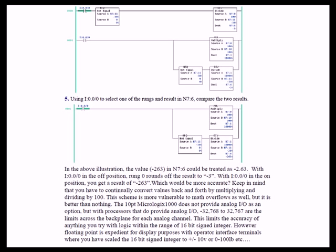Keep in mind that you have to continually convert values back and forth by multiplying and dividing by 100. Now this scheme is very vulnerable to math overflows as well, because you cut your total range down by 100. But it is better than nothing, and sometimes you want to display what appears to be a floating point on the screen of an MMI. You can simply do this by using two numeric displays adjacent to each other, and you subtract the first two positions out. You put 2 in the first numeric display and 63 in the second with a static decimal point in between the two, and it looks like it's 2.63. So this is a very difficult scheme to massage until it really works good for you, but it is better than nothing.